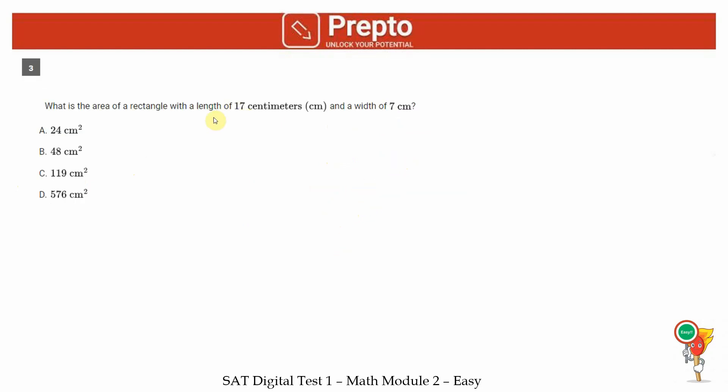Third question, what is the area of a rectangle? Length is 17 and width is 7. So the area of a rectangle is basically length into width. In our case, it's going to be 17 into 7, which is 119 centimeters. You can multiply it yourself or you can use the Desmos calculator. Answer is option C.